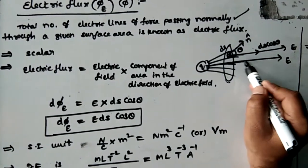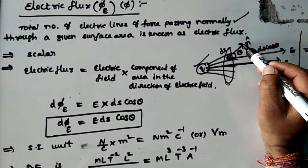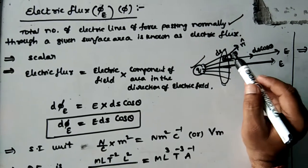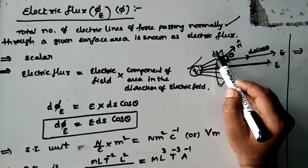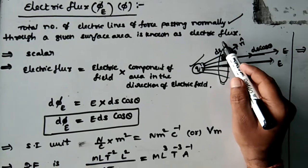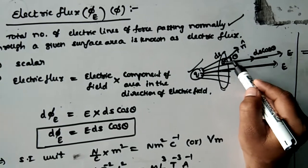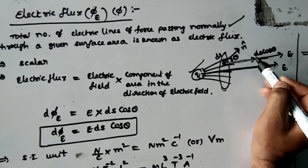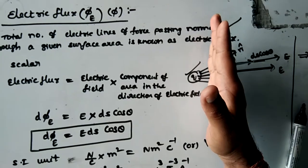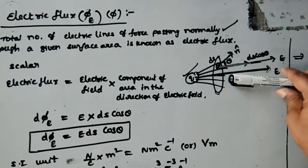In this example, the electric field is directed away from the charge, and the normal drawn to the surface makes some angle theta with the electric field. Since ds is a vector, we divide it into two components: ds cos theta (in the direction of the electric field) and ds sin theta (perpendicular to it). Now, ds cos theta is the component that is normal — perpendicular — to the surface.